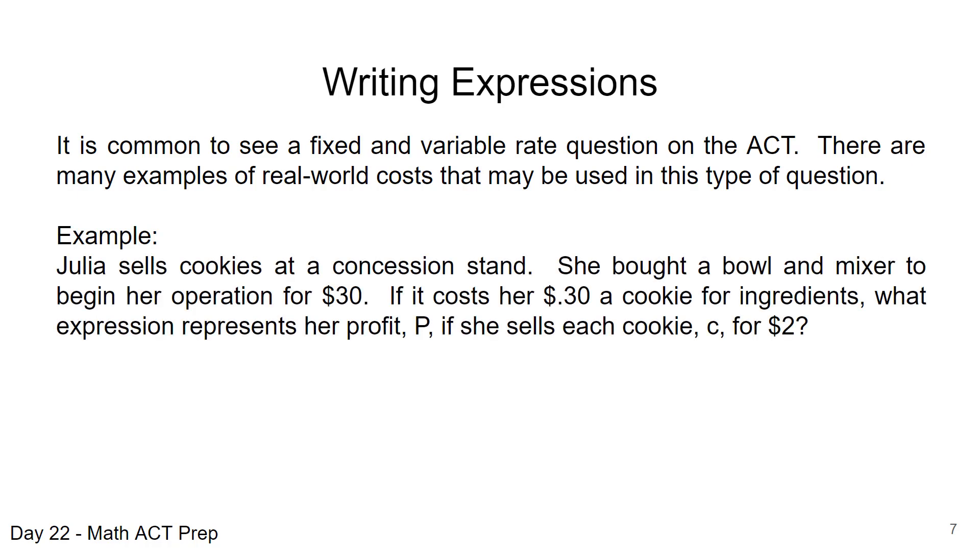So let's take a look at this example. Julia sells cookies at a concession stand. She bought a bowl and mixer to begin her operations for $30. So that is her fixed cost. No matter what, she's got a $30 cost. Now it also costs her $0.30 a cookie for ingredients. What expression represents her profit, P, if she sells each cookie, C, for $2? We're looking for profit, an overall profit. We know that she sells a cookie for $2. That's what she begins with. But we have to subtract out her cost. That's how a business works, right? So no matter what, she has a $30 upfront cost and then $0.30 per cookie. Our variable in this case is C, cookies, how many she sells.